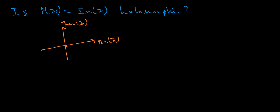I could take the limit from many different directions — this direction, this direction, this direction, and so on. For my function to be holomorphic at the origin, all of these limits have to be the same. So if f(z) = Im(z) is not holomorphic, all I need to do is show that two of these limits are different. I'm going to use the limit definition of the derivative and approach along the real axis first, then the imaginary axis, and compare the answers.